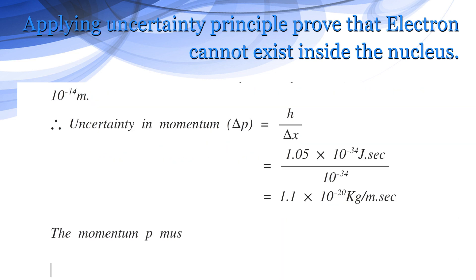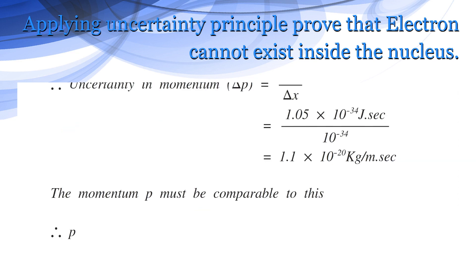The momentum p must be comparable to this. Therefore, p is approximately equal to delta p, which equals 1.1 into 10 to the power minus 20 kilograms per meter second.